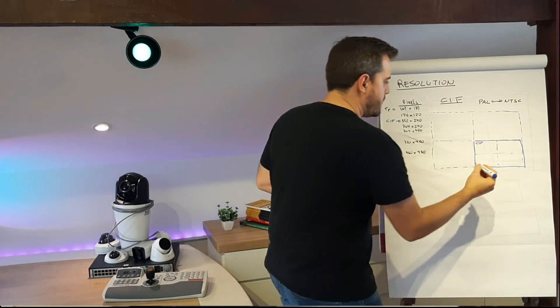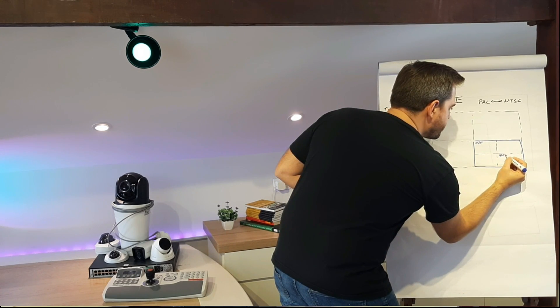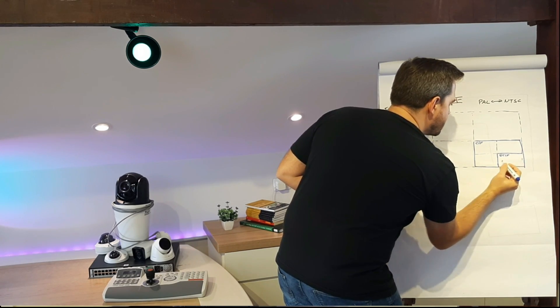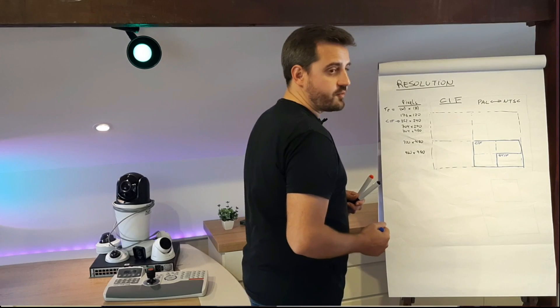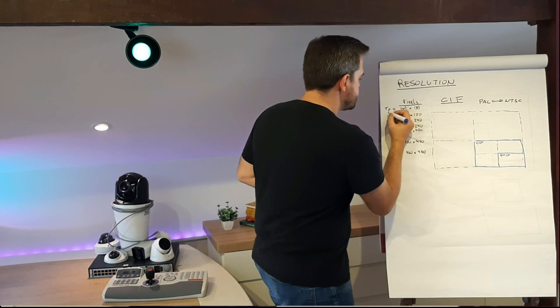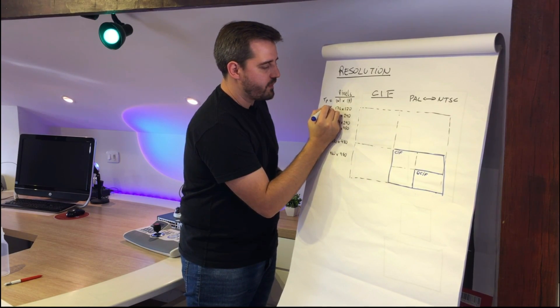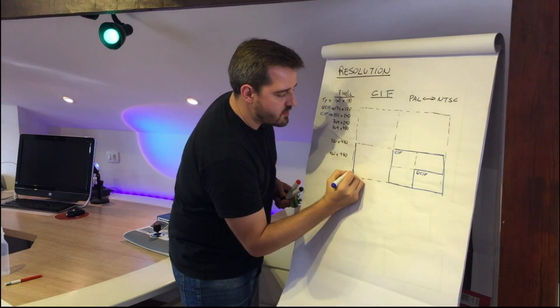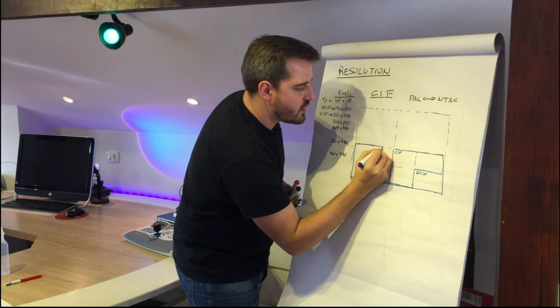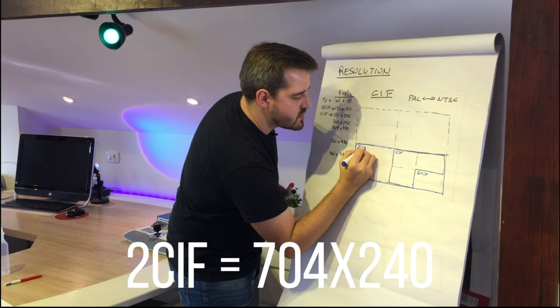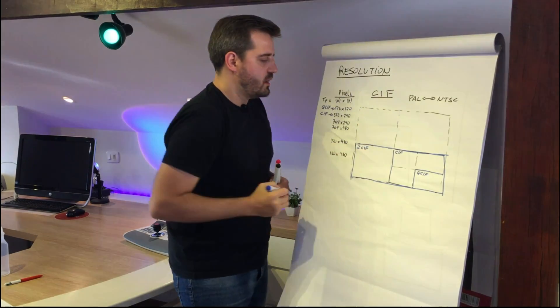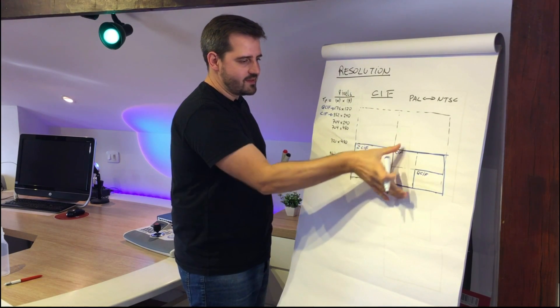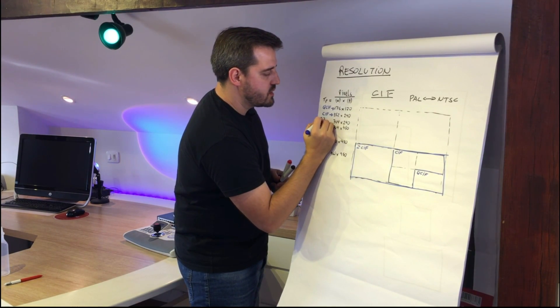We have also another type of SIF which is Q-SIF, which is half of the height and half of the width of the SIF. So this is Q-SIF. We have another resolution which is called 2SIF and it's twice the width that we have in the SIF but the same height.